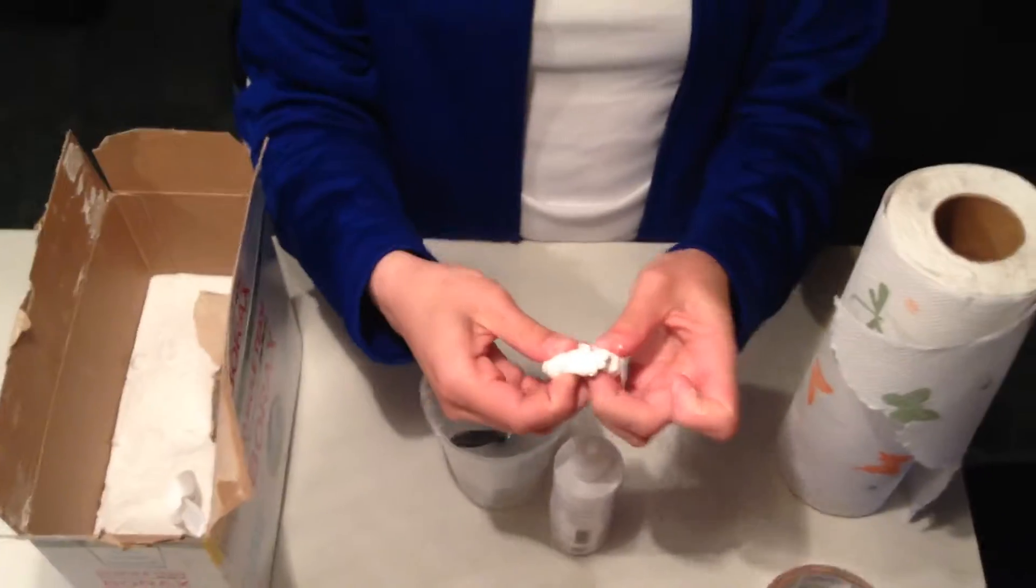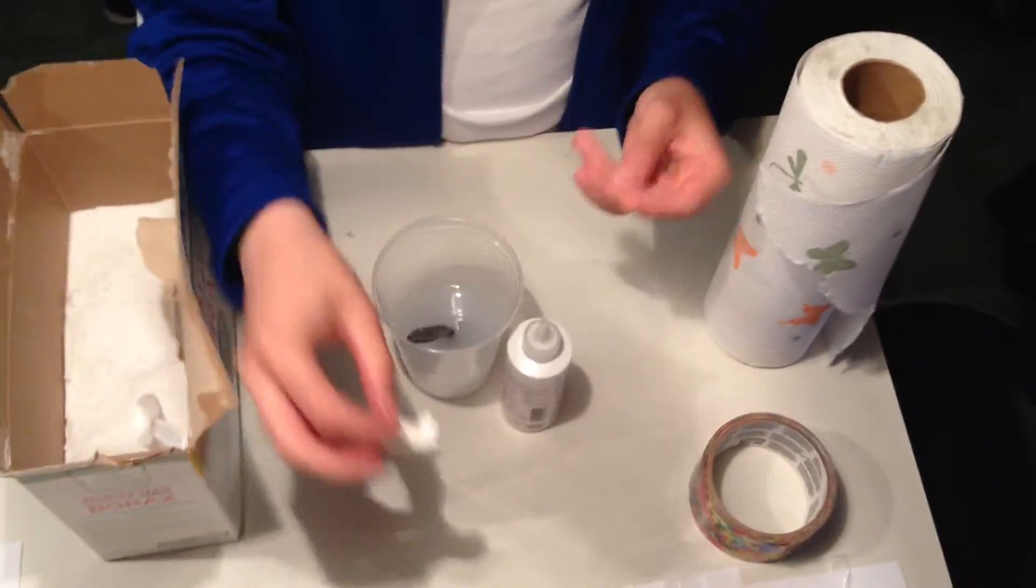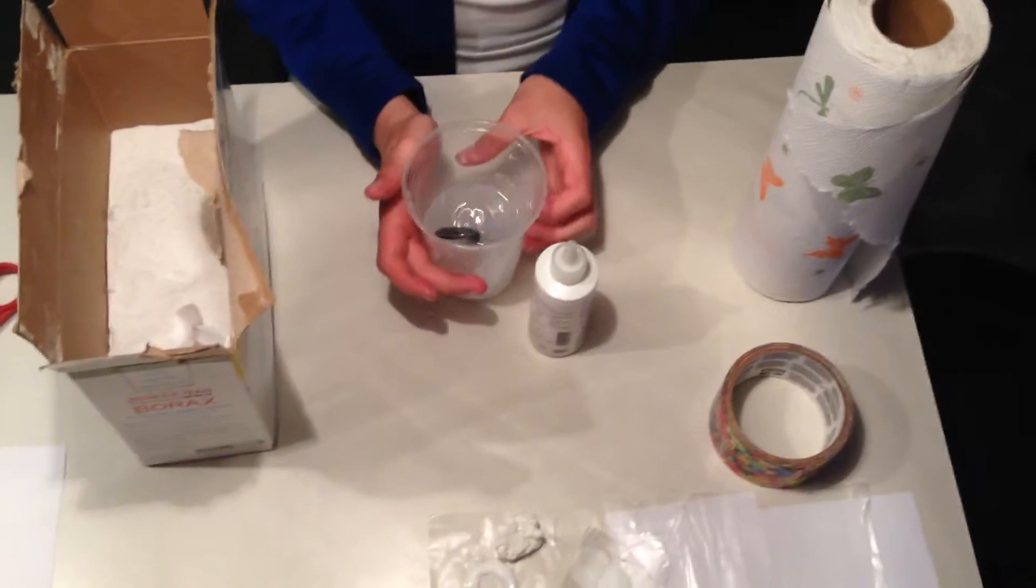Today we're going to be making Silly Putty. So this is what the final product looks like. And so what you're going to need is glue, water, this is the same cup that I made the previous one in, and borax.